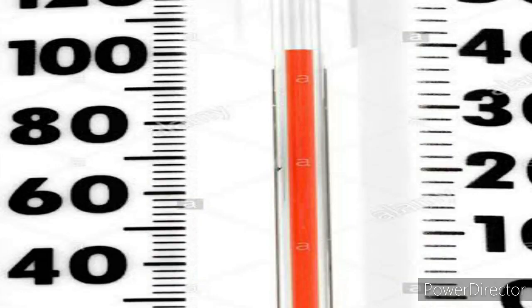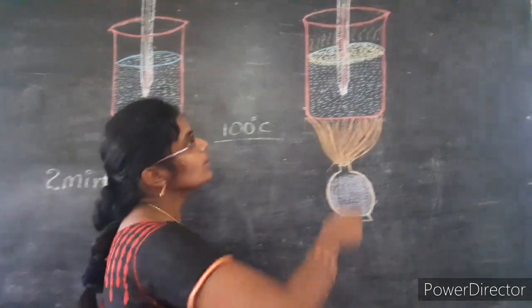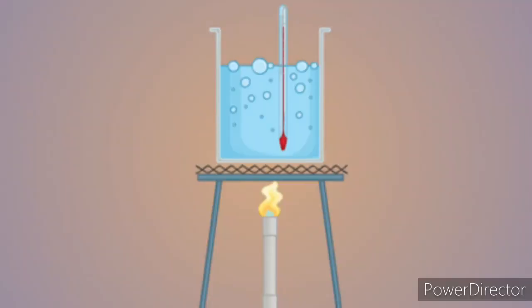At 100 degrees Celsius, even though we supply heat energy continuously, the temperature does not increase further. We will also observe bubbles forming on the surface of the water.